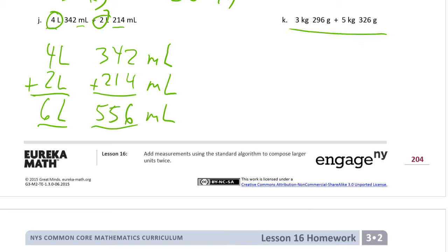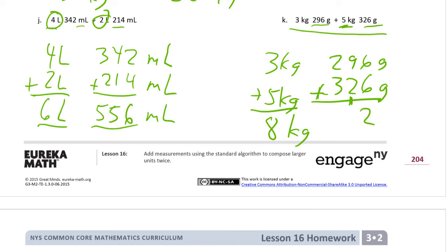And now here we have another example of mixed units. We have kilograms, 3 kg. And our other addend has 5 kilograms. We're going to add those kilograms together. And then we're going to add the grams together. So this is 296 plus 326, and these are grams. 3 and 5 is 8 kilograms. And then we have 6 and 6, that's 12. And then that 10 and 2 is another 12. And that's 622 grams.